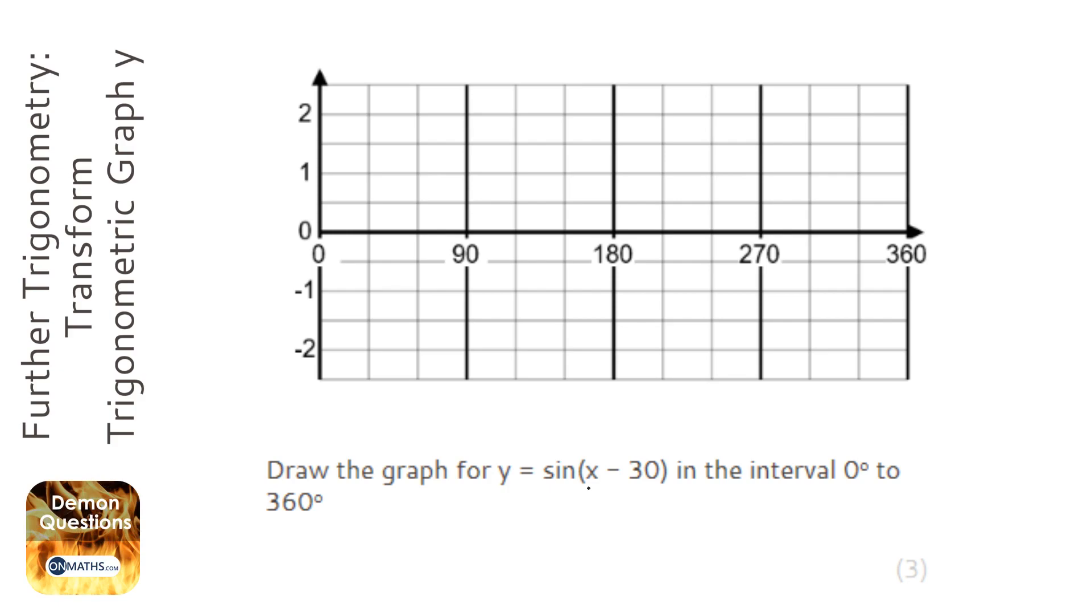Now what's happening here is we've taken away 30 before we put it into sine. So at this point here, sine thinks we're at zero because that point there is 30. We're going to do 30 take away 30, which is zero. Sine thinks we're at zero, which it will spit out as the answer.